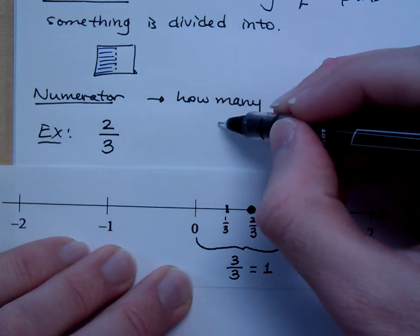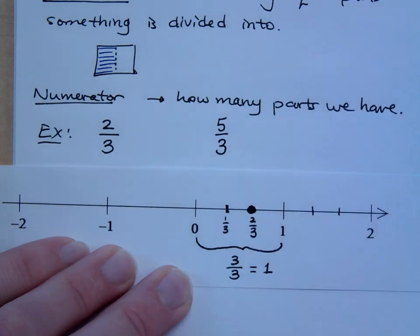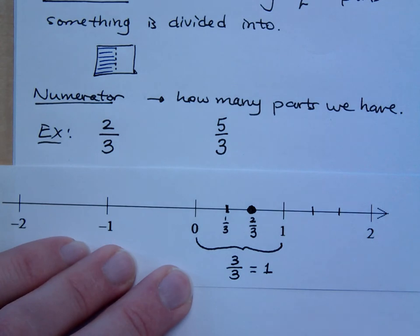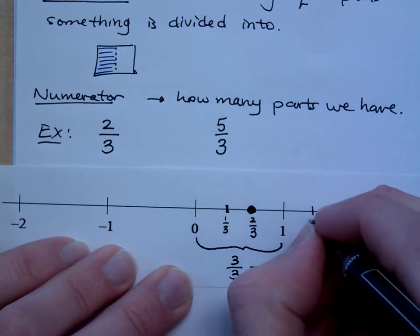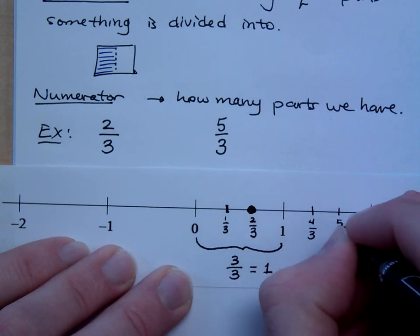What if I wanted to graph five-thirds? Well, five-thirds is no longer a proper fraction. Five-thirds is what we call improper. So if I were to keep counting these thirds, we know that one is three-thirds, so this would be four-thirds here, and this would be five-thirds.